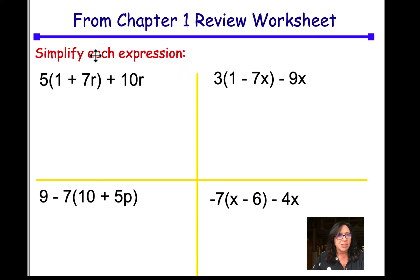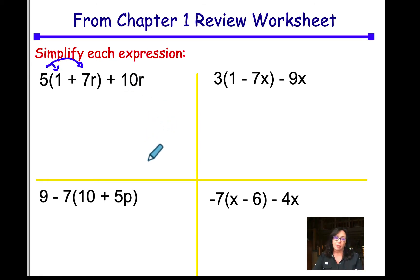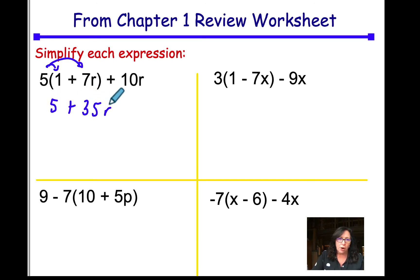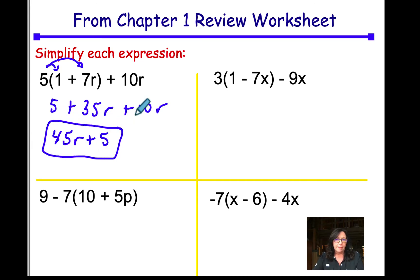From the review sheet, some practice simplifying expressions. Remember that when you distribute, you have to multiply that 5 by both terms inside the parentheses. So in doing that, we would get 5 plus 35r, that's 5 times 7, plus 10r. So 10 plus 35 is 45, we have 45r plus 5. That's our answer — box that up.